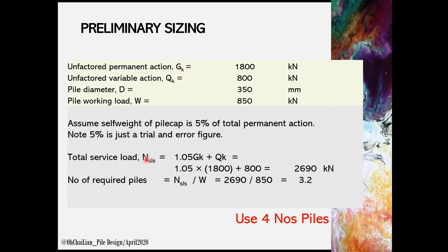From the assumption, we can obtain the total service load using 1.05 GK plus QK. We can obtain the number of required piles by dividing N_SLS by pile working load. We need to always round up the value we obtain, say 3.2 in this case, and we can provide 4 numbers of piles.